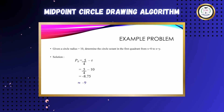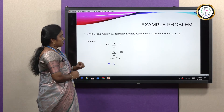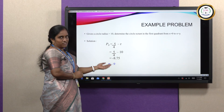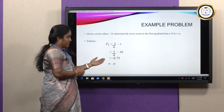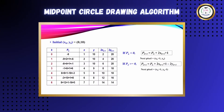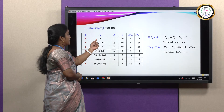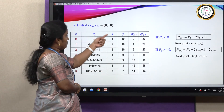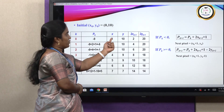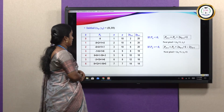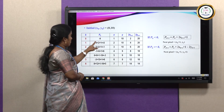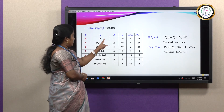Example: draw a circle with radius r = 10. The initial decision parameter is 5/4 − r = 5/4 − 10 = −9 (approximated). Since p0 = −9 < 0, the initial point is (0, 10) and we use the first case: x increments to 1, y remains 10, so the next pixel is (1, 10). The next decision parameter is pk+1 = −9 + 2(1) + 1 = −6, which is again negative.